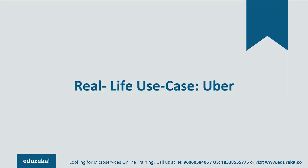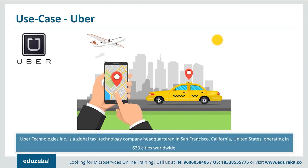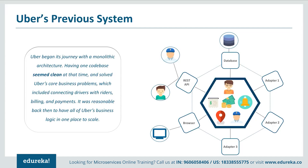Let's look at a real-life use case of Uber. Uber Technologies is a global taxi technology company headquartered in San Francisco, United States, operating in 633 cities worldwide. Like many other startups, Uber started with a monolithic architecture for a single city. Initially, they had a REST API connecting passengers and drivers, with the mobile API connected to the REST API which was then connected to the monolithic backend server. There were three adapters performing functionalities such as notifications, sending mails or messages, billing, and payment. Finally, a MySQL database captured all their data.